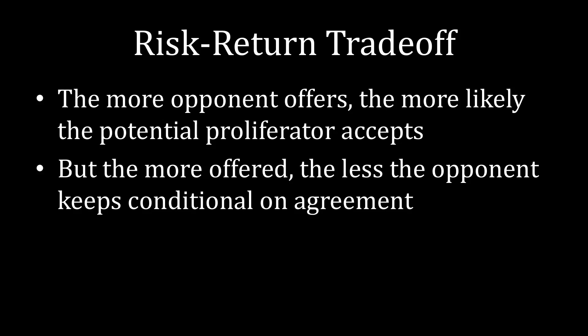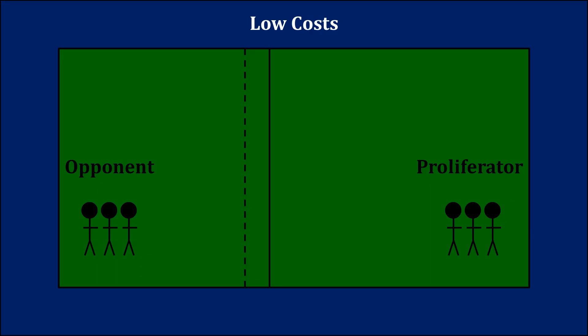Or do you want to play things safe, make a generous offer, a conservative demand, and guarantee acceptance from both lower and higher cost types of potential proliferators? One of the determinants of the optimal demand within the risk-return tradeoff is what the opponent thinks the potential proliferator is likely to be. For example, imagine that the opponent believes the potential proliferator is going to have low costs 99% of the time, and only 1% of the time would have high costs. It makes sense to play things safe here. If the opponent gets aggressive and demands more for itself, then 99% of the time the potential proliferator will reject such a demand, leading to the negative consequences of nuclear proliferation. The opponent doesn't want that, and it's not worth betting on the 1% chance it will work.